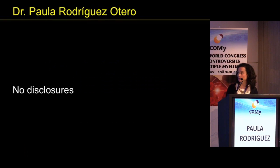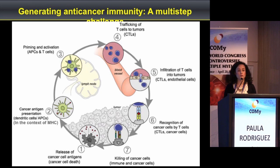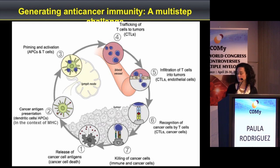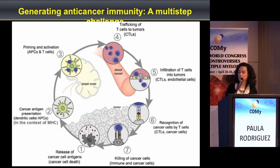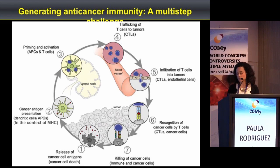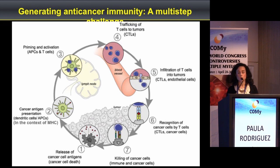First of all, our immune system is capable of controlling cancer, and this is a complex multi-step process. It requires first the release of cancer cell antigens after tumor cell death. These antigens are processed and presented by antigen-presenting cells to T cells, and once these T cells are primed and activated, they travel to the tumor site to build the immune response.